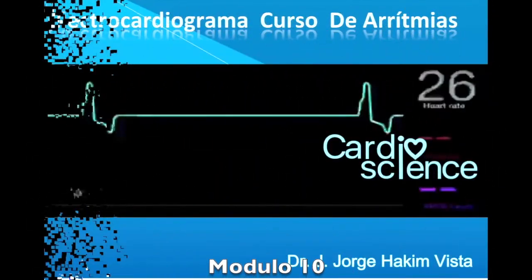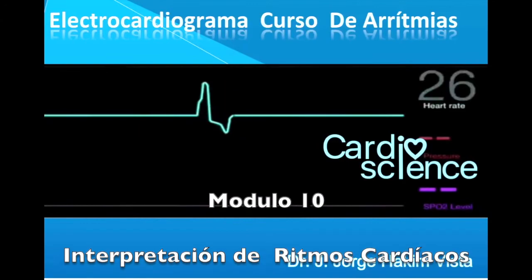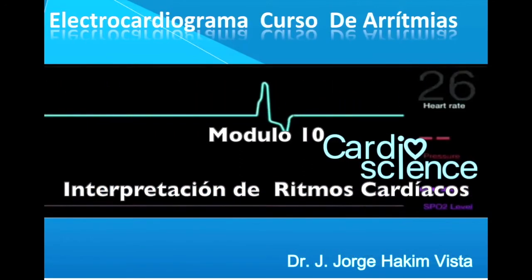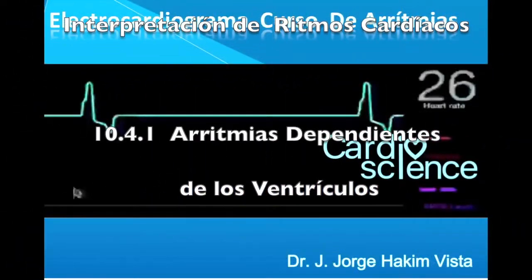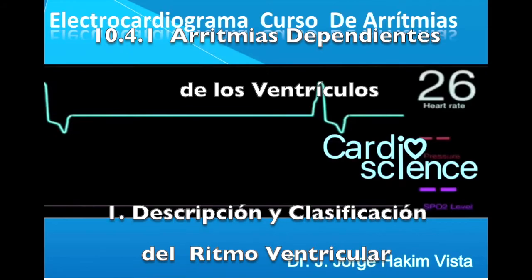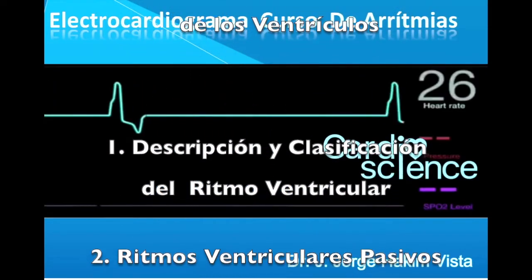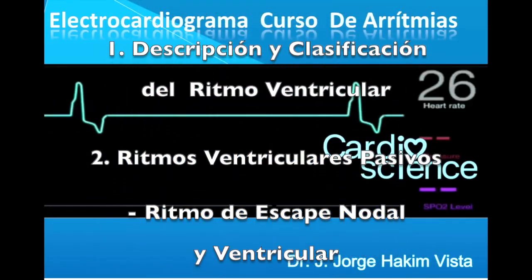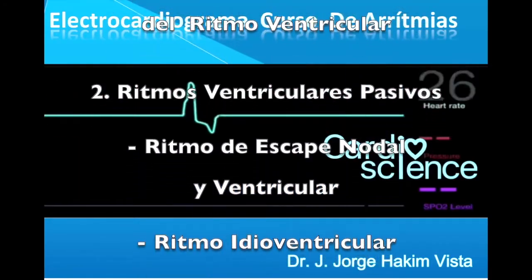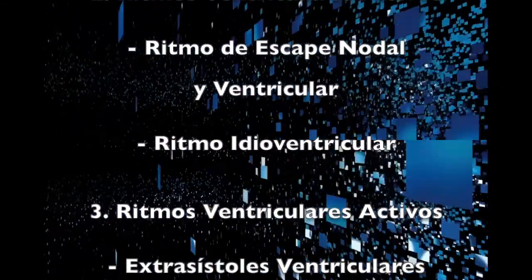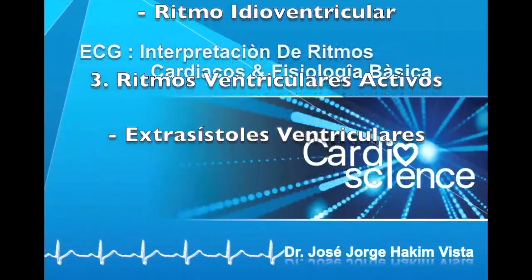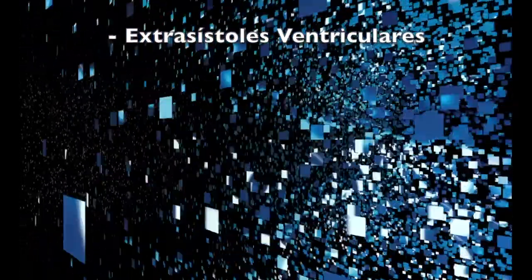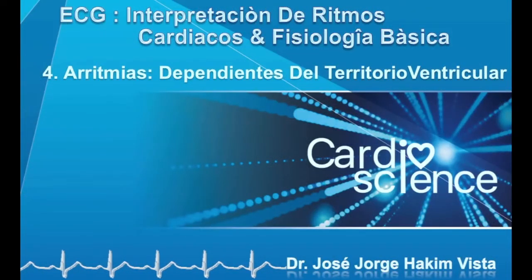CardioScience presenta el módulo 10 de su curso de electrocardiografía poligráfica deductiva: Interpretación de ritmos cardíacos o arritmias cardíacas. Revisaremos el tema de arritmias dependiente de los ventrículos, su descripción y clasificación, así como los ritmos ventriculares pasivos como el escape nodal y ventricular, el ritmo idioventricular y los ritmos ventriculares activos: extrasístoles ventriculares. Empezamos.